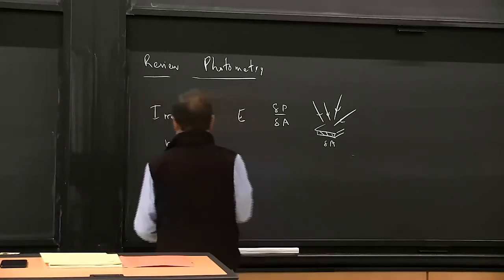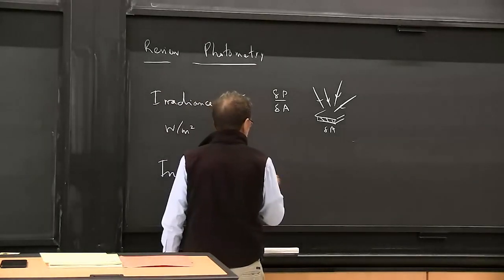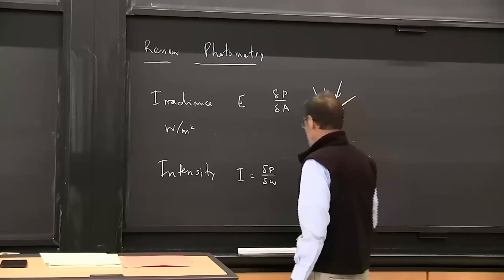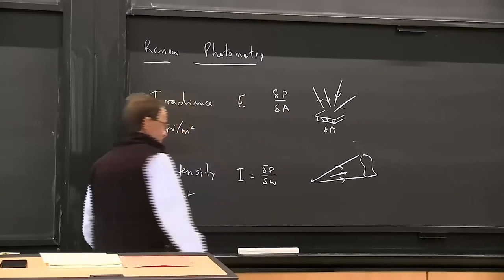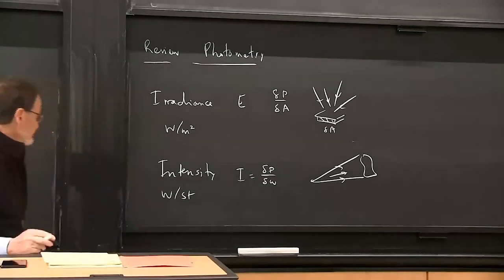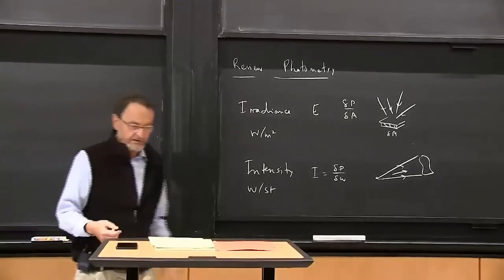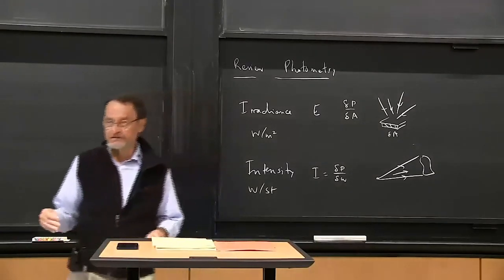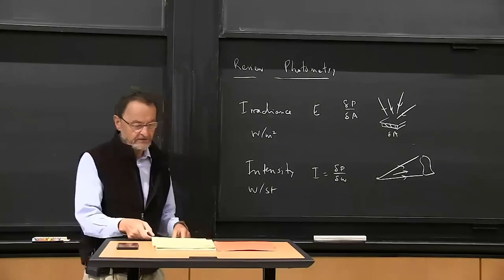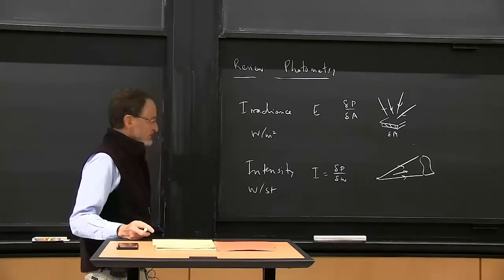Then we talked about intensity. It's a quantity which applies to a point source, and it describes the power per unit solid angle. So we have to define the solid angle. If you have a good old incandescent light bulb, it's very low intensity in the direction of the base because that's blocked by the base, and some higher intensity in other directions. That's a quantity that isn't of a whole lot of interest to us here.